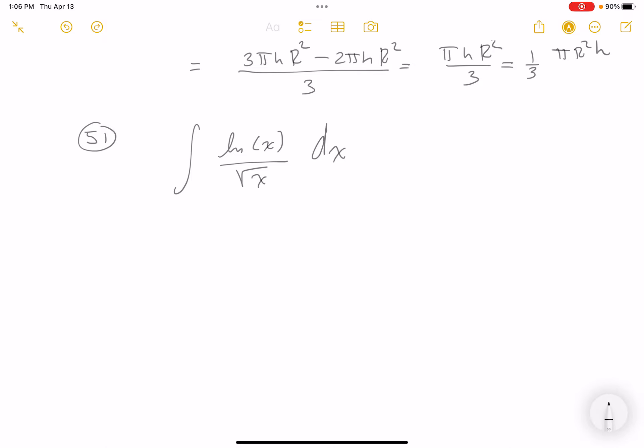Let me go forward. How do I do that? I'm gonna try u equals the natural log of x, and then du would be 1 over x dx. All right, that's not so bad.